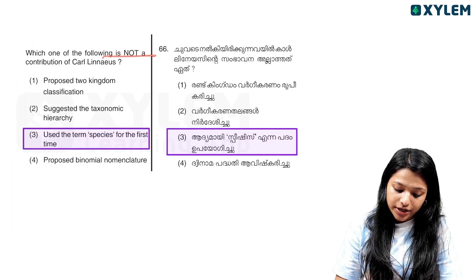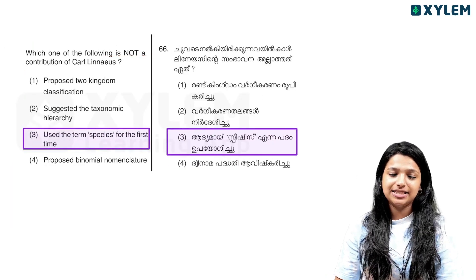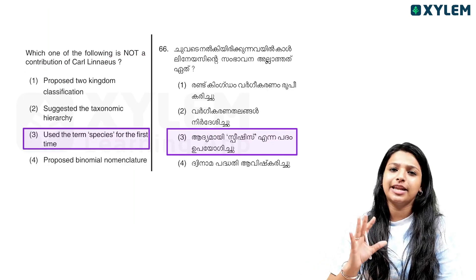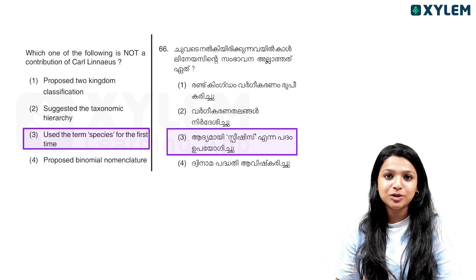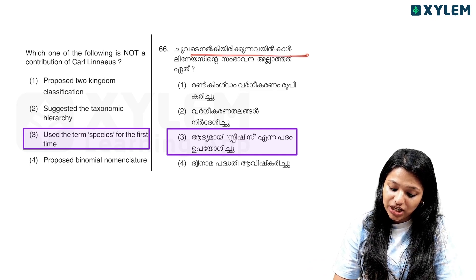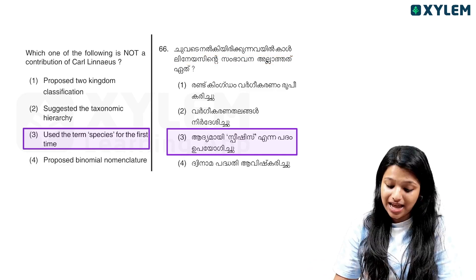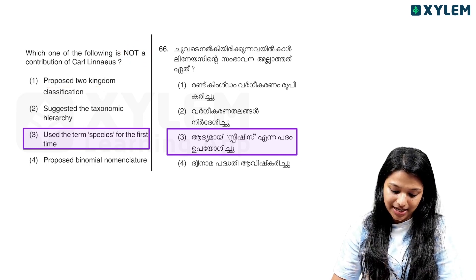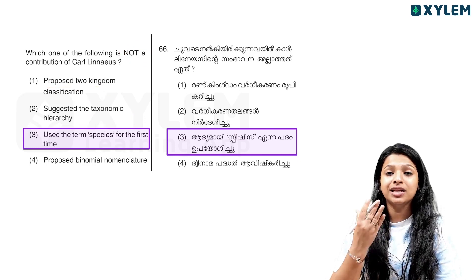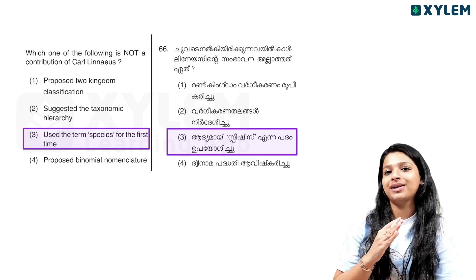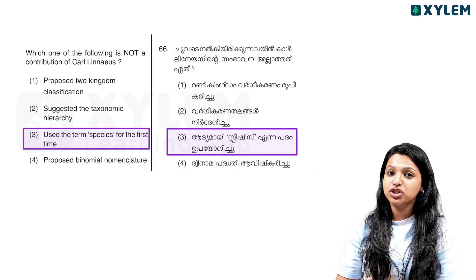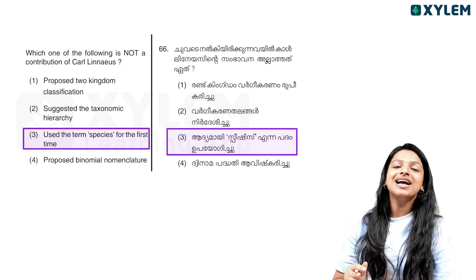Which one of the following is not a contribution of Carolus Linnaeus? In the classification by Linnaeus, we look at the two kingdom classification. This is the taxonomic hierarchy. This is the proposed binomial nomenclature.